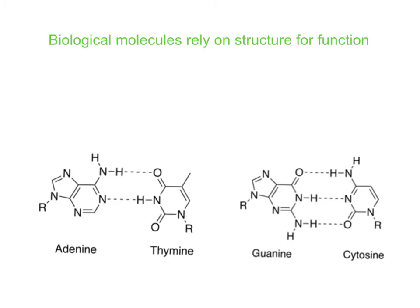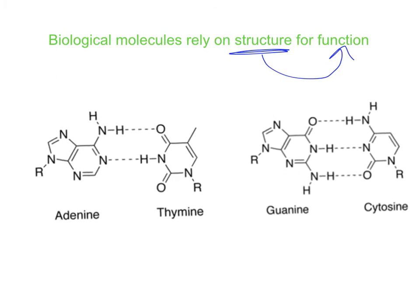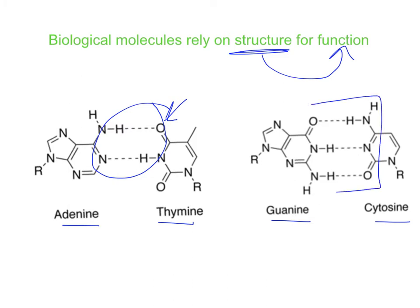In biology, molecules are recognized and interact based on shape — structure is crucial for function. The 3D shape of biological molecules is due to these intermolecular forces, and their shape dictates their function. A great example is DNA: the base pairing of A to T and G to C is due to hydrogen bonding. Adenine and thymine each have two places for hydrogen bonding, while guanine and cytosine both have three, limiting them to bonding only with each other.